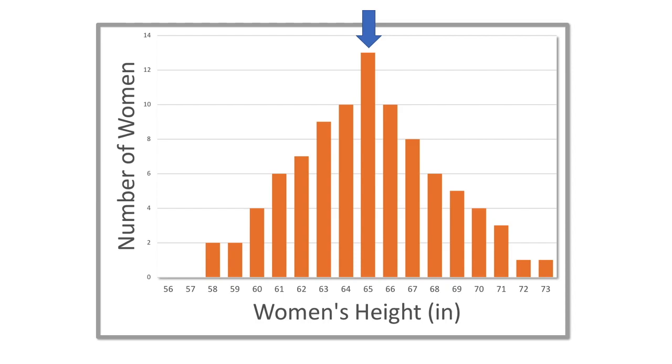Conversely, you can tell that there aren't very many really short or really tall people because those bars aren't so big. So if one of these women walked out of a room, she'd most likely be between 63 and 66 inches tall because those bars fill up the most area on the graph.